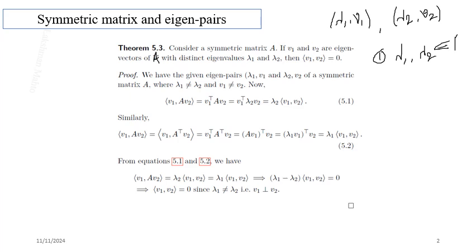A symmetric matrix always has real eigenvalues. The second property: if we have two distinct eigenvalues, the corresponding eigenvectors v1 and v2 satisfy the condition that their inner product is zero — meaning v1 and v2 are perpendicular or orthogonal to each other. This is not generally true for any square matrix, but it is true for symmetric matrices. So v1 is perpendicular to v2.